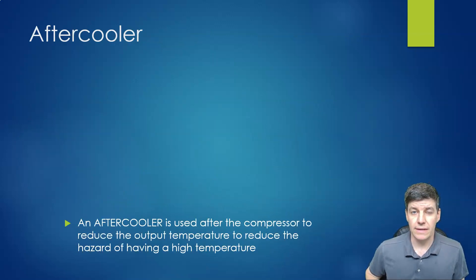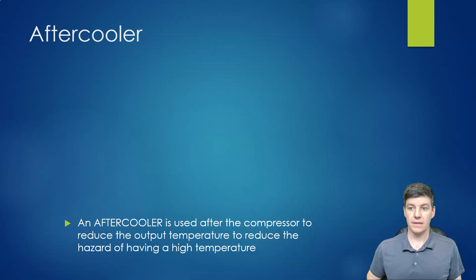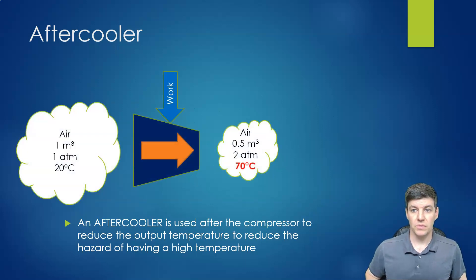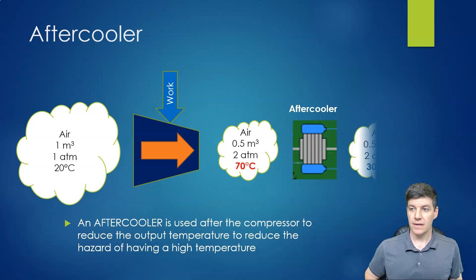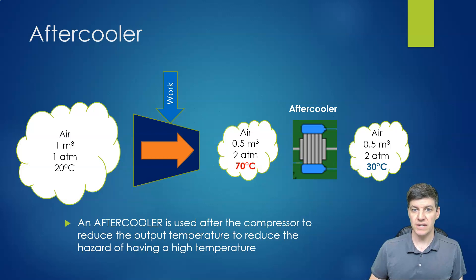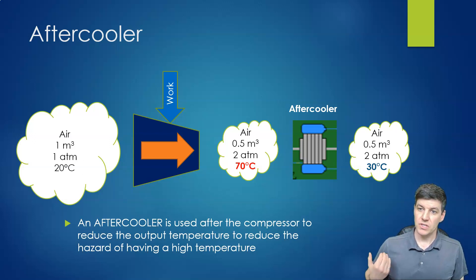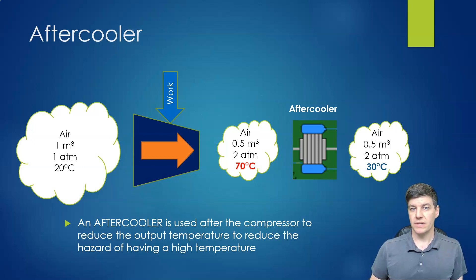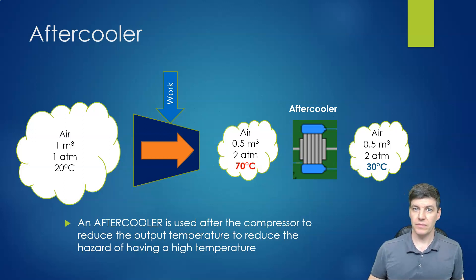So we bring in an aftercooler — something that cools the air after all the compression is done. We go through our compression cycle, hot air comes out, and we pass it through a cooler which reduces that air temperature down to something that is safe. That's the primary role of the aftercooler. In our simulation, ours is water-cooled through a heat exchanger, but sometimes they're air-cooled or other types of cooling.